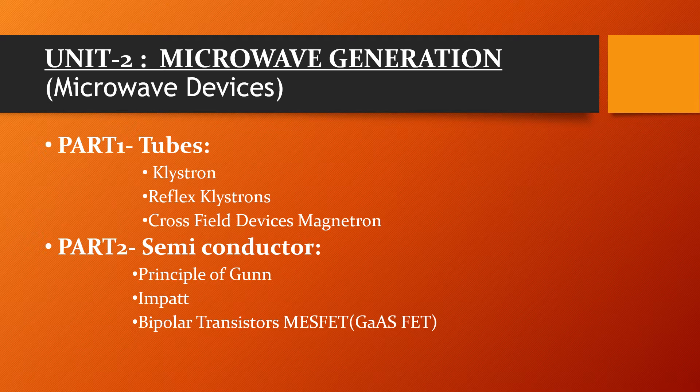Microwave Devices also deal with design. We have seen in Unit No. 2 that is related to Microwave Generations. This unit has two parts: one part is Microwave Tubes and one part is Semiconductor. The tubes we will see are Klystron, Reflex Klystron, Crossfield Devices, and Magnetron. In Semiconductor Devices: Principle of Gunn, IMPATT, Bipolar Transistor, MESFET, Gallium Arsenide Field Effect Transistor.